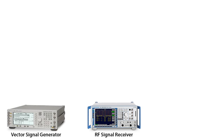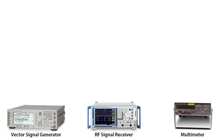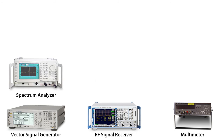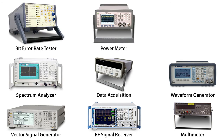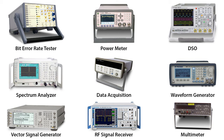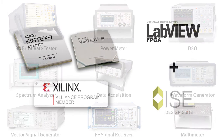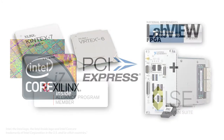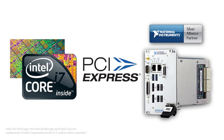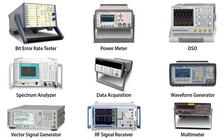From the outside, the 1211B appears to be similar to a traditional boxed instrument. However, instead of performing a single measurement function, the 1211B uses the underlying power of FPGAs and multi-core processing to synthesize different real-time and near-real-time RF and microwave measurement apps that can run concurrently.